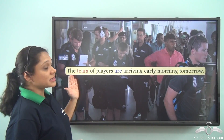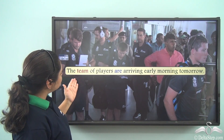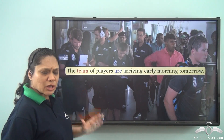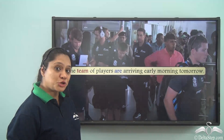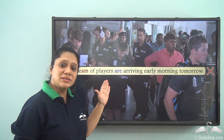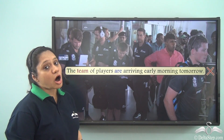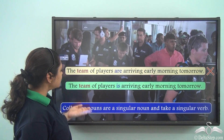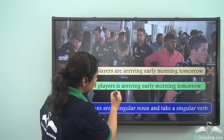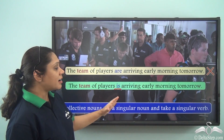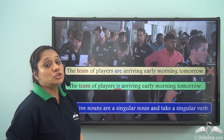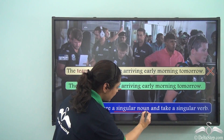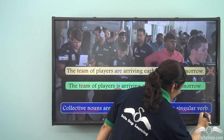Now let us read the sentence: 'The team of players are arriving early morning tomorrow.' Does this sentence seem correct to you? No, it is not correct. We will write it correctly as: 'The team of players is arriving early morning tomorrow.' Note that collective nouns are singular nouns and take a singular verb.